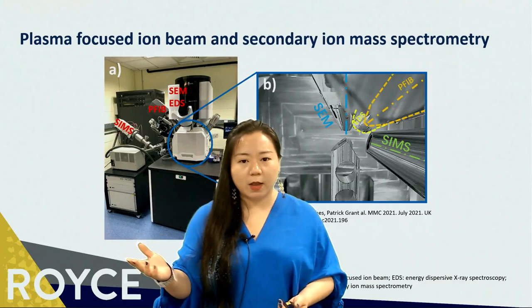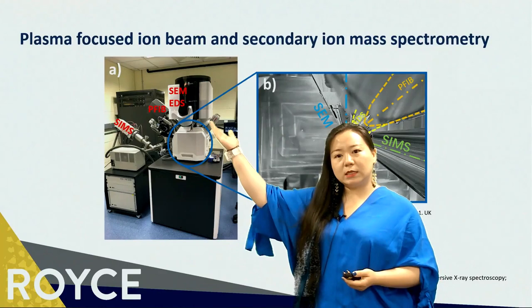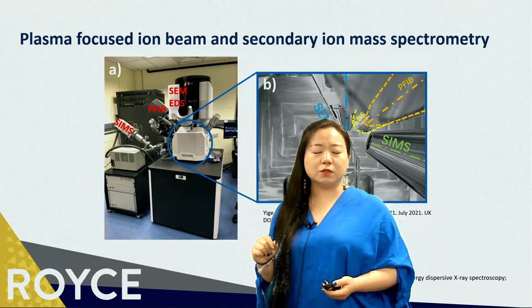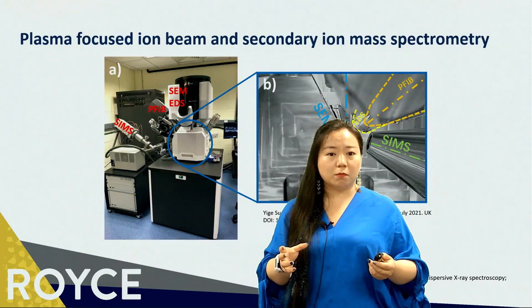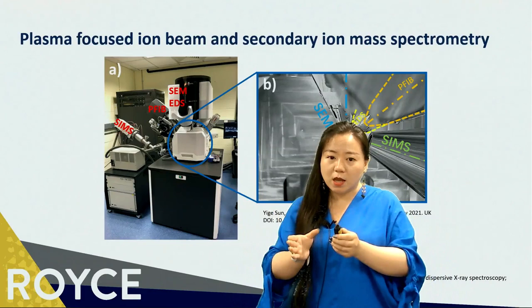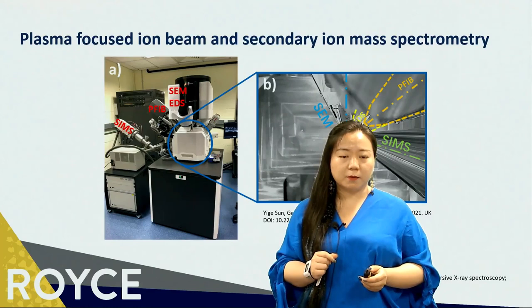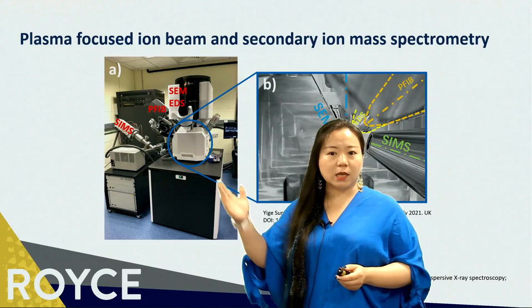To better understand the physical and chemical properties of the electrodes, here we use a plasma FIB combined with EDS and SIMS. In this system, the SEM is used for imaging, and the plasma FIB is used for cross-sectioning and polishing. The high current capability of the plasma FIB allows it to mill an area with a large area and bigger volume at a shorter timescale with less beam damage, compared with a conventional gallium-based FIB. Most elemental distributions can be obtained by EDS.